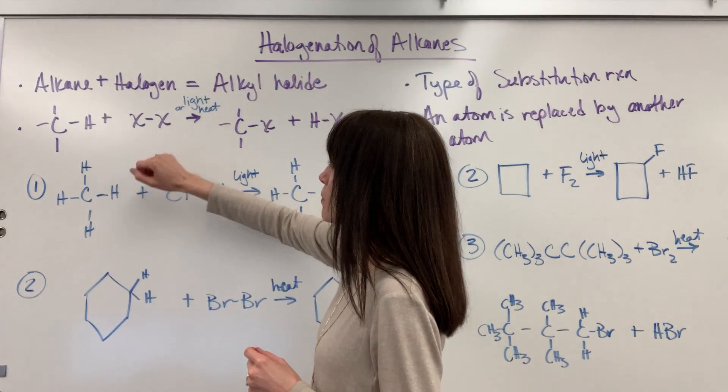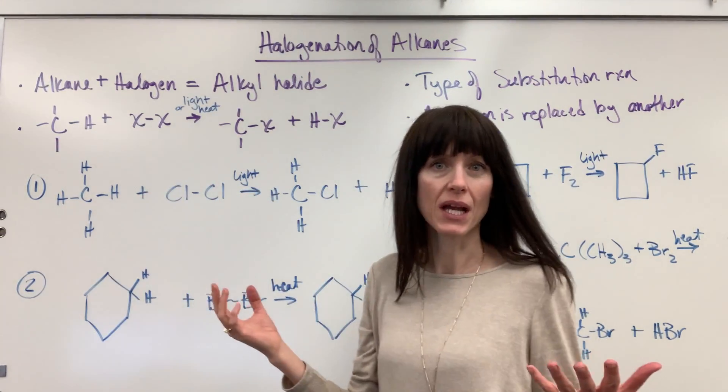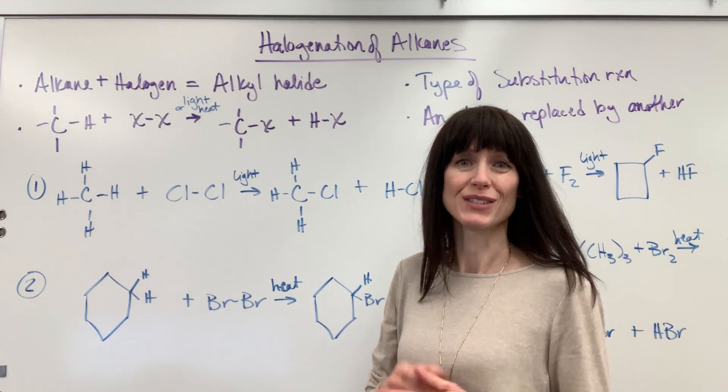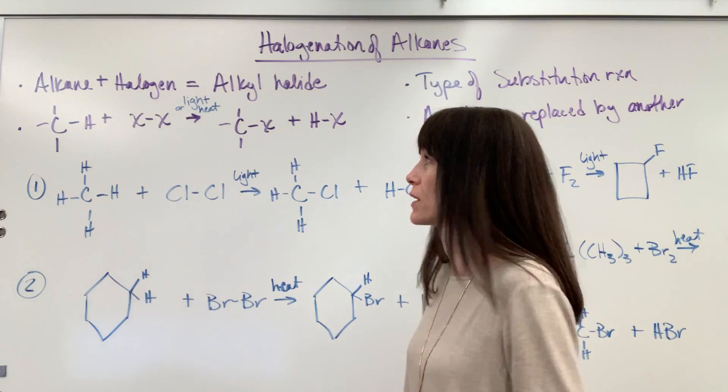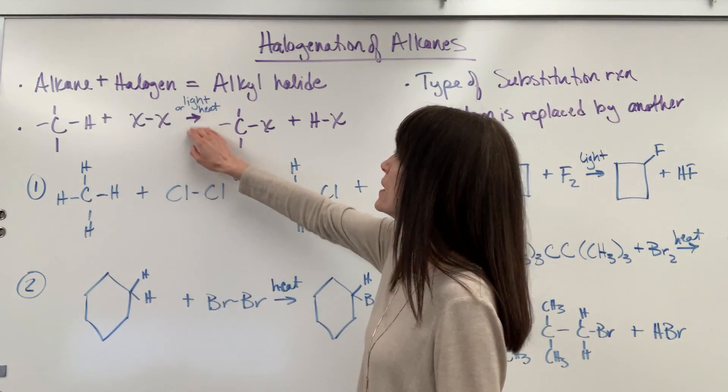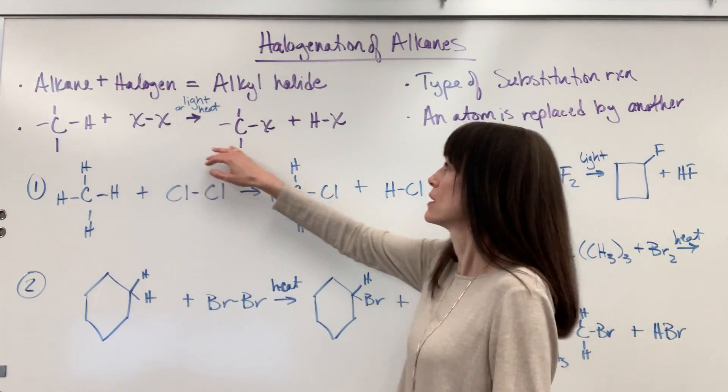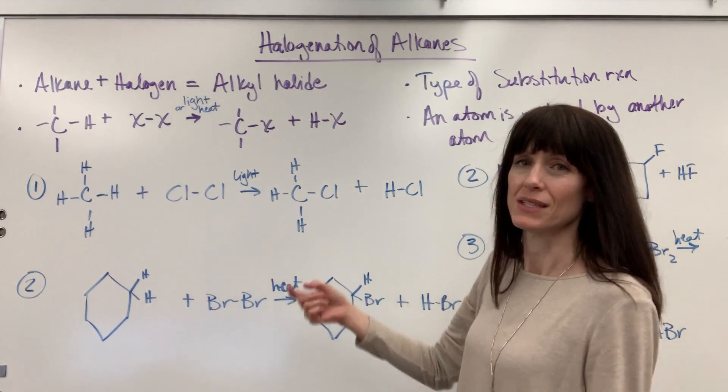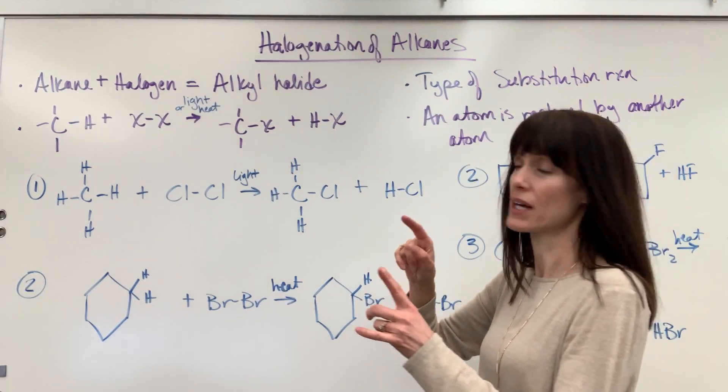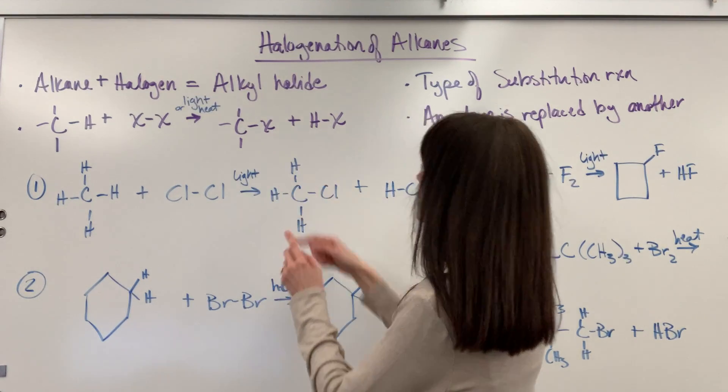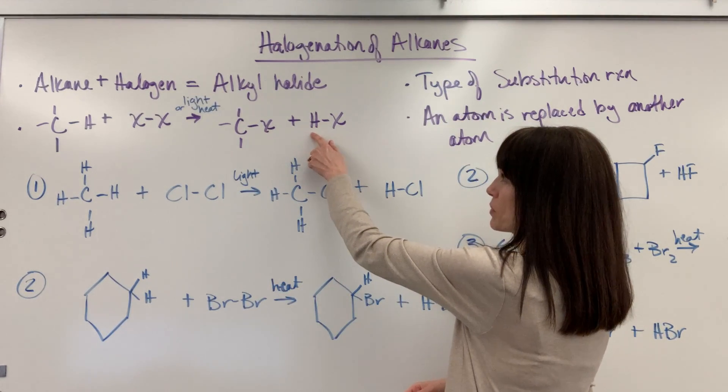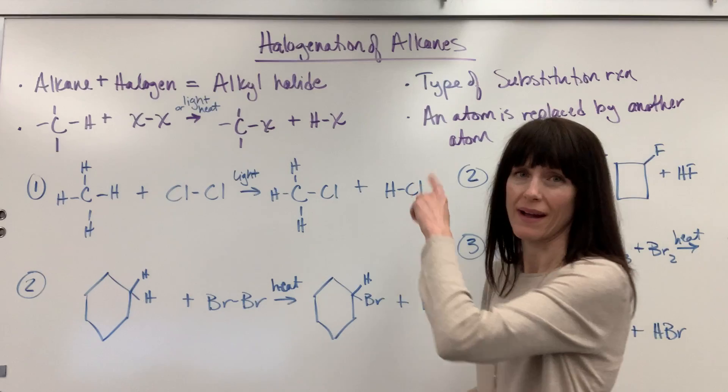And then this double X, X single bond into X is just representing a halogen. Our halogens are diatomic elements in their elemental form. They're always bonded to each other, covalently bonded. Now you either add light or heat to that and notice it's really just a substitution reaction. One halogen atom replaces the hydrogen and the hydrogen that's replaced is then bonded to a halogen.